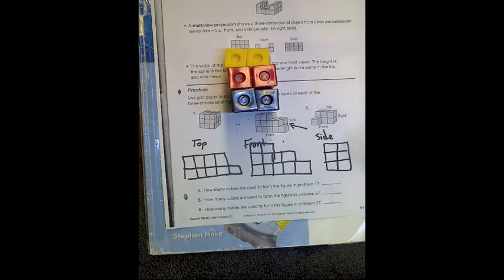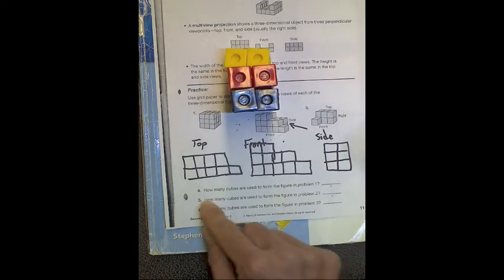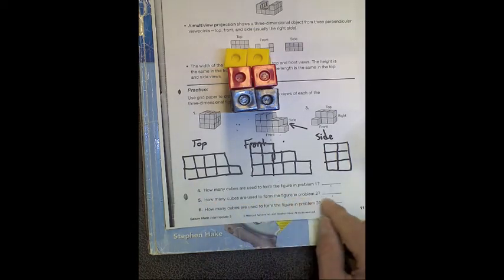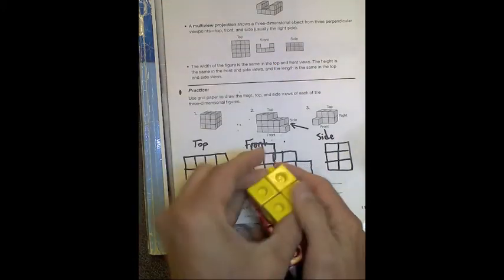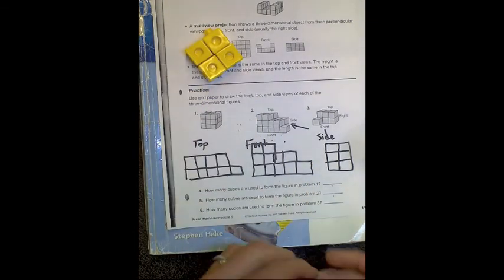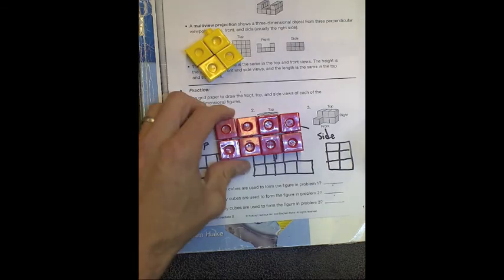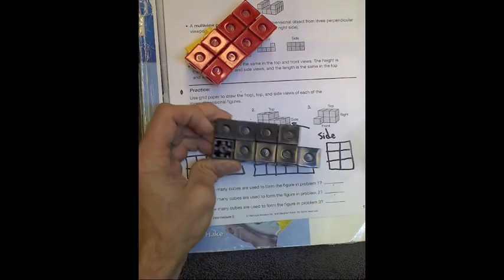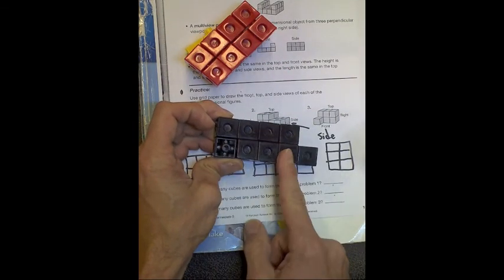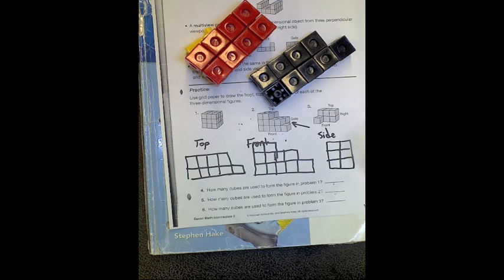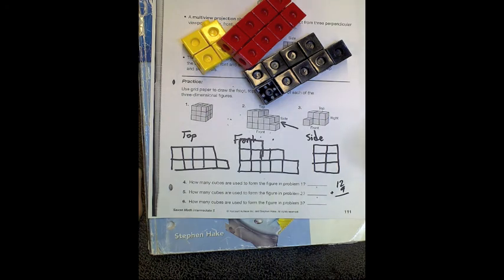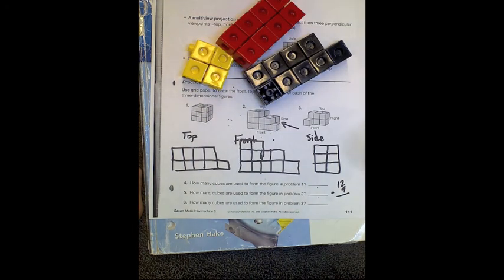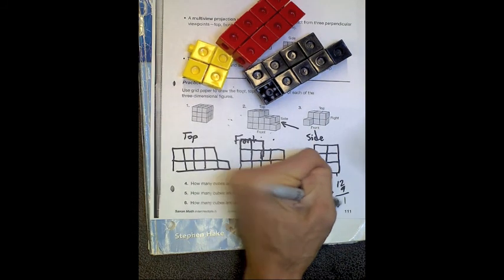Now, number five. This is how many cubes are used to form the figure in problem two. Well, this is problem two. So let's just go ahead and count those to see how many we have. On the top, I had the four yellow. In the middle, I had the eight red, making twelve. And then on the bottom, I have another eight, plus the extra one, making nine. So, the twelve plus the nine. Twelve blocks total plus the nine black ones on the bottom. And you have a total of how many? Twenty-one.